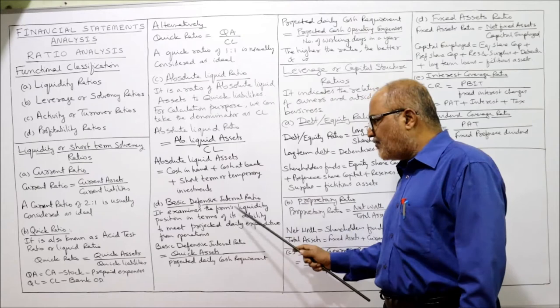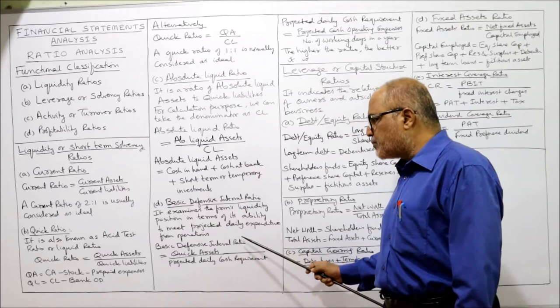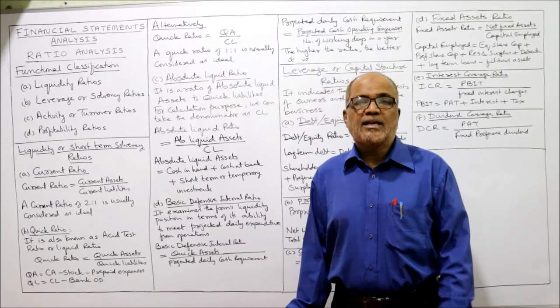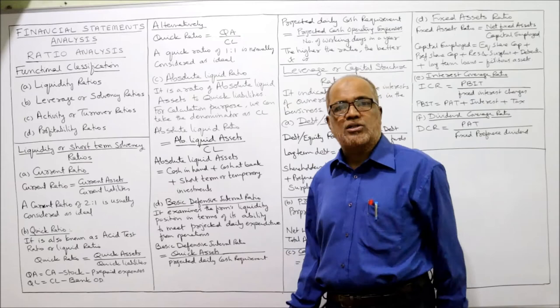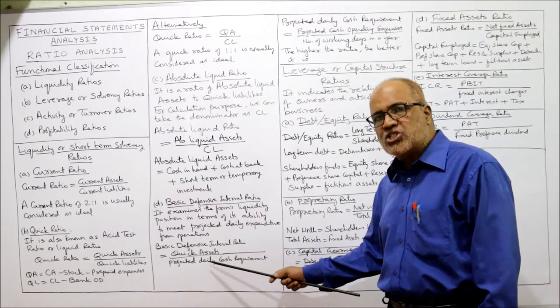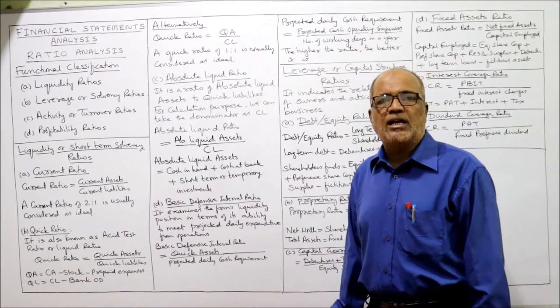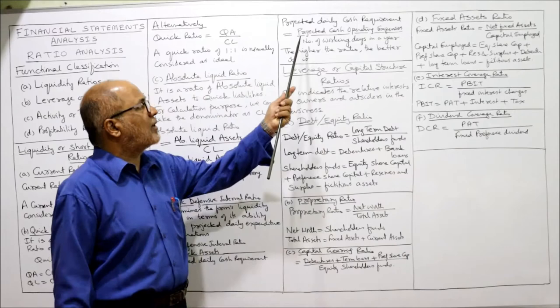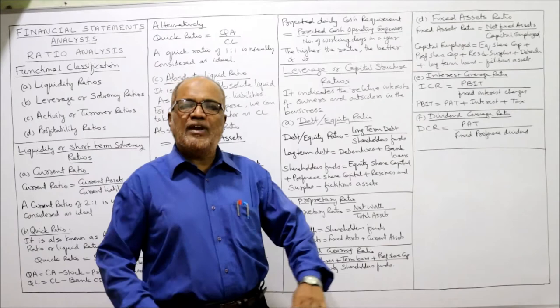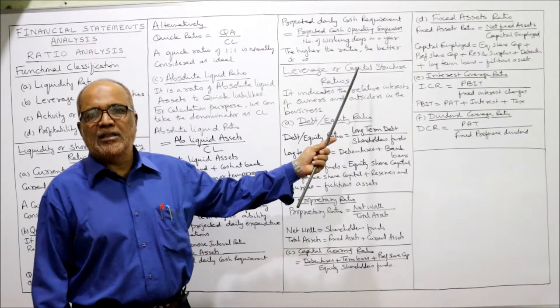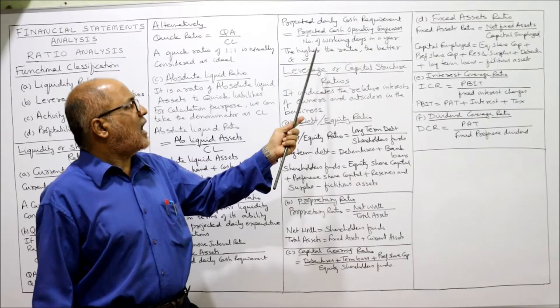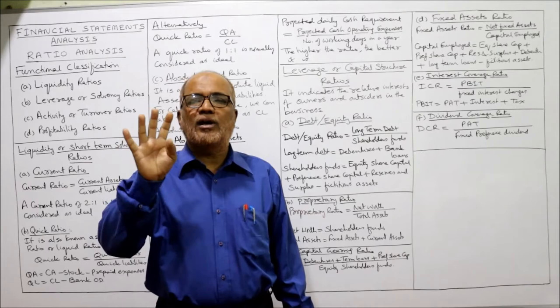The fourth and final liquidity ratio is basic defensive interval ratio. This ratio examines the firm's liquidity position in terms of its ability to meet projected daily expenditure from operations. The formula is quick assets divided by projected daily cash requirement. Projected daily cash requirement equals projected cash operating expenses divided by number of working days in a year. The higher the ratio, the better it is.